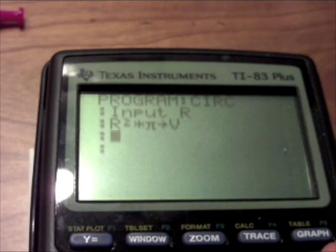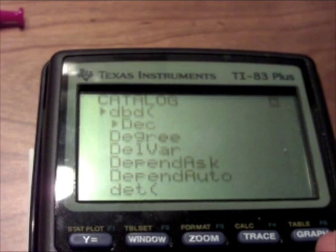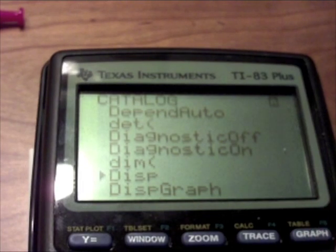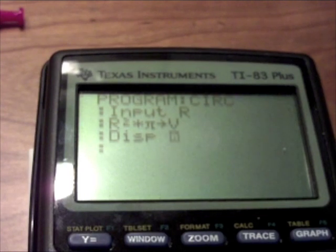So then, what you do is, this is a very simple program, you just go to, if you want to see something, like if you want to display, go to catalog, D, and then go down to D-I-S-P, and then click wherever V is, and that should work.